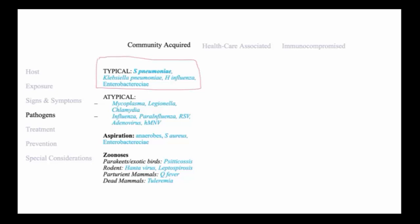Pathogens of atypical pneumonia include mycoplasma, legionella, chlamydia, but also consider viral pathogens, including influenza, para-influenza, RSV, adenovirus, and human metapneumovirus.